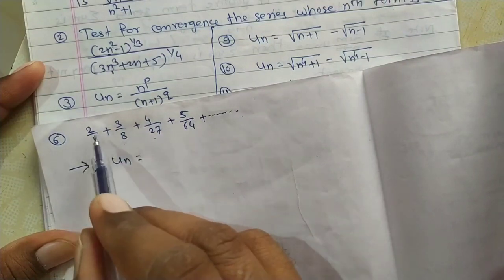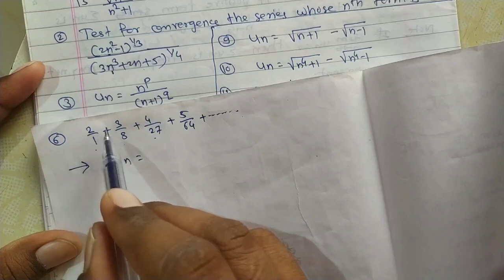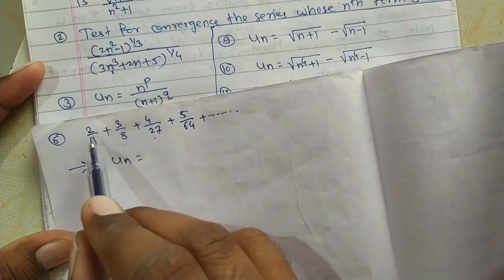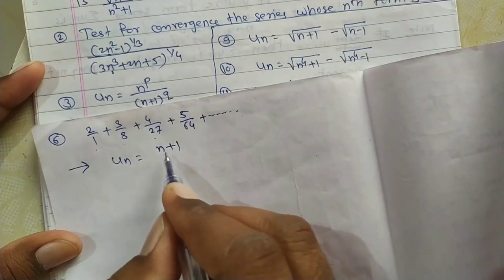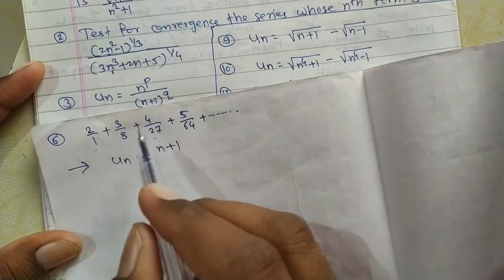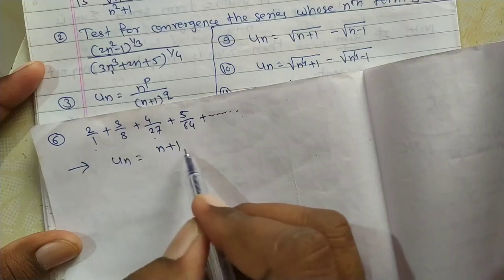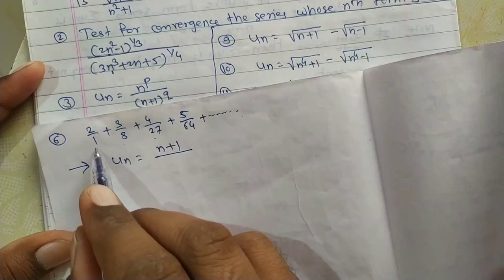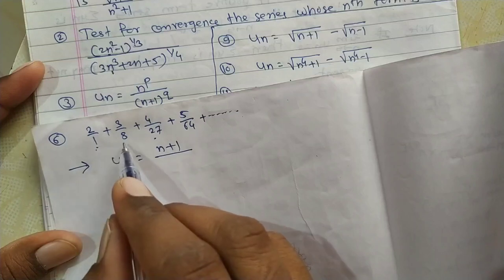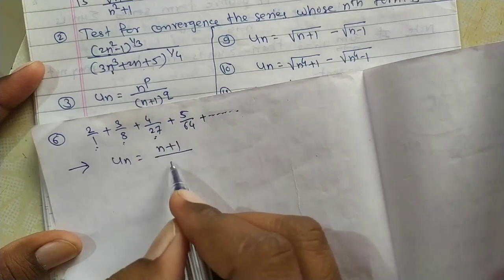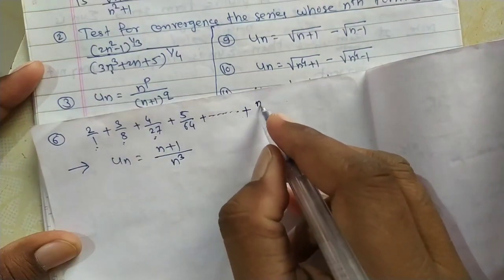Looking at the numerator: u1 has 2, u2 has 3, u3 has 4. So for n=1 we get 2, for n=2 we get 3. If we take un = n+1, putting n=1 gives 1+1=2, n=2 gives 3, n=3 gives 4. For the denominator: 1, 8, 27 are cubes — 1³, 2³, 3³, 4³. So the nth term is un = (n+1)/n³.